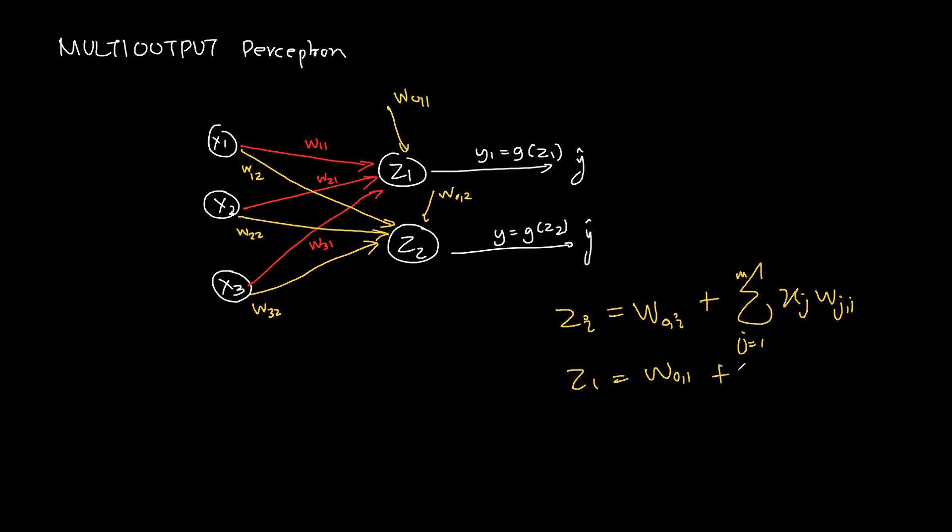This particular thing is my bias plus summation of j one, two, three: x_j w_j1. So this will only change - one one, two one, three one will change for x1, x2, x3.